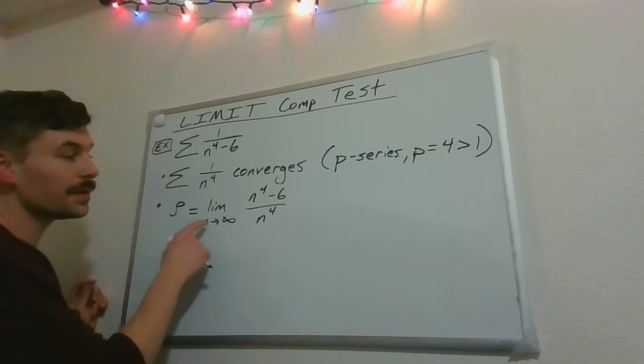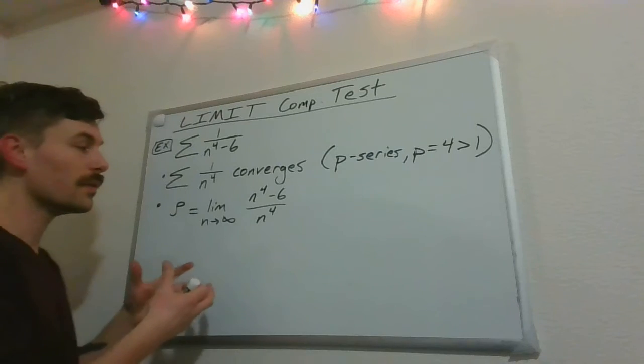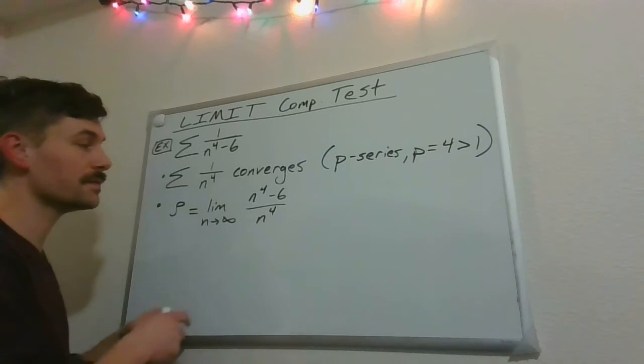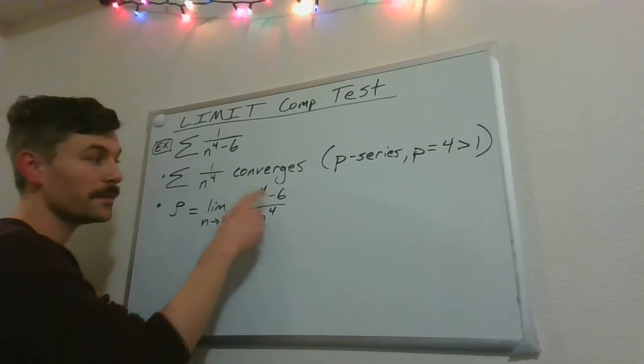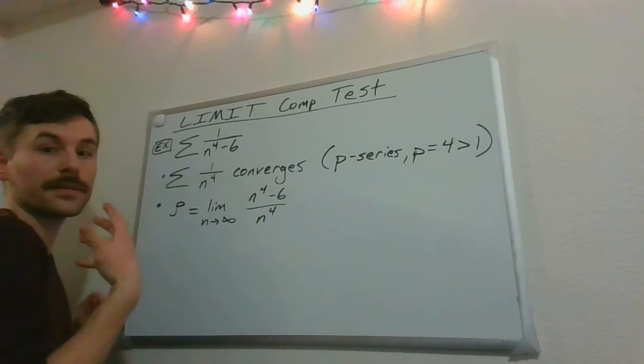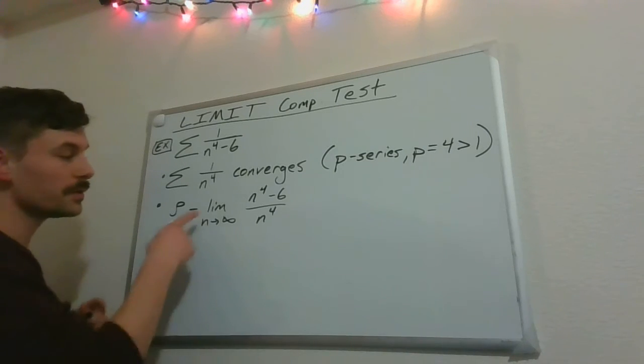Okay, so the reason it doesn't matter what order we go in is we're just looking for behavior, right? So we're looking for this to be finite and positive. So if it converges, we're going to get something finite. It's basically saying that these two series act the same, maybe differing by some constant multiplier.